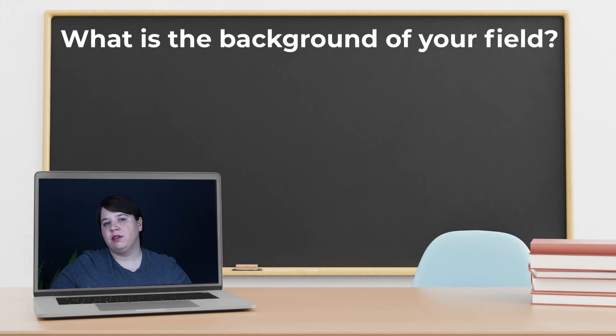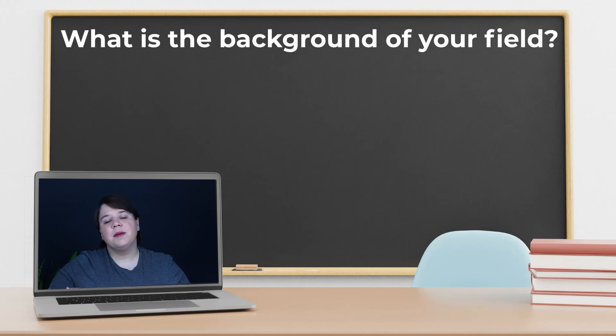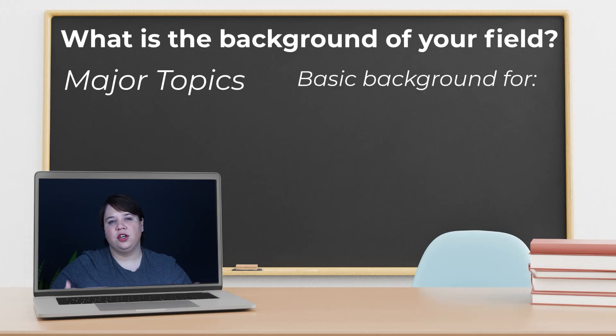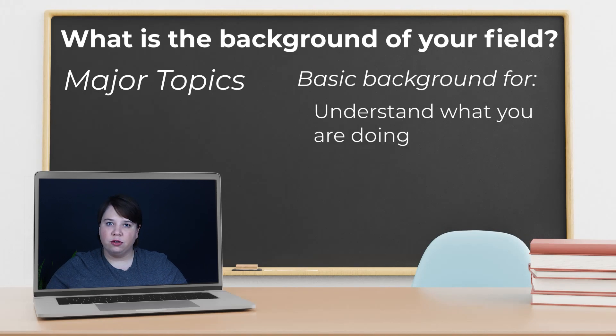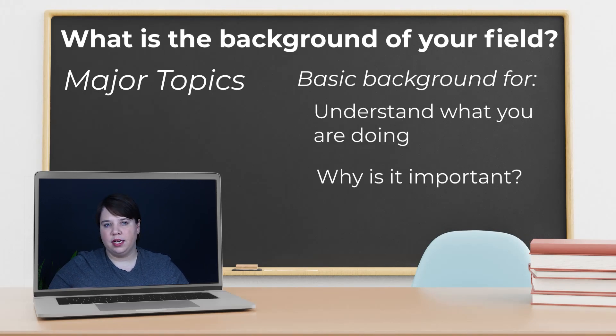Once you've clarified why your field is important, you want to answer the second question: what is the background of your field, or what background knowledge does your reader need to understand your results? Think about the major topics your paper falls into, then write the basic background information someone would need to know about those topics to understand what you're doing and why it's important within the context of your greater field. This is usually more like textbook-style writing, but you want to tell it within a story, leading the reader from one section to the next.